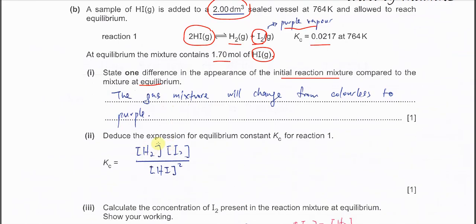Deduce the expression for Kc. You must put the square bracket products over reactants, so it's going to be [H₂][I₂] over [HI]². The square brackets represent the concentration of each reactant and product.